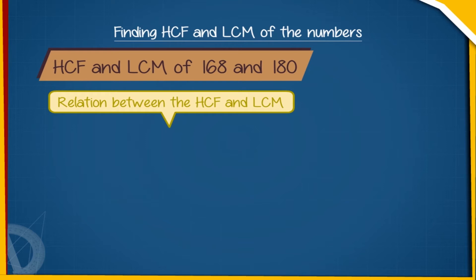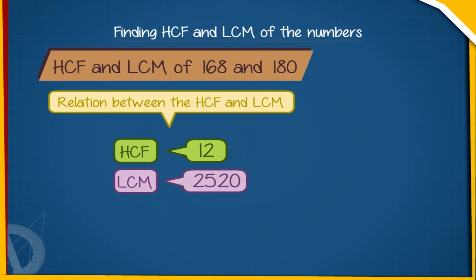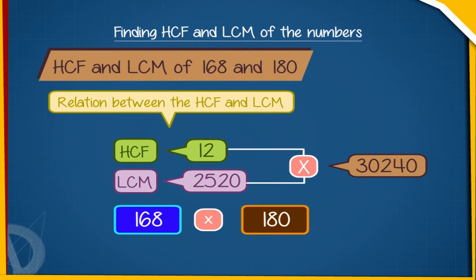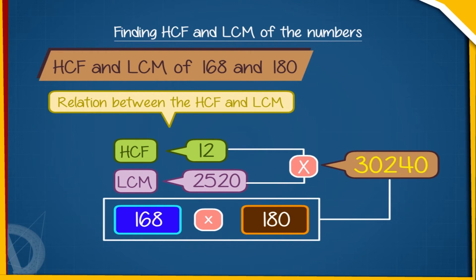Let us verify the relation between the HCF and LCM of these numbers. HCF × LCM = 12 × 2520 = 30,240. Multiplying 168 by 180 also gives 30,240. Therefore, we can say that the product of the HCF and LCM of two numbers is equal to the product of the numbers.